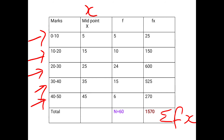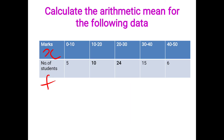The f values are 5, 10, 24, 15, 6 respectively. Now multiply midpoint (x) by f to get fx: 5×5 = 25; 15×10 = 150; 25×24 = 600; 35×15 = 525; 45×6 = 270. Remember, for continuous data always use the mid value as your x value — 5, 15, 25, 35, 45.